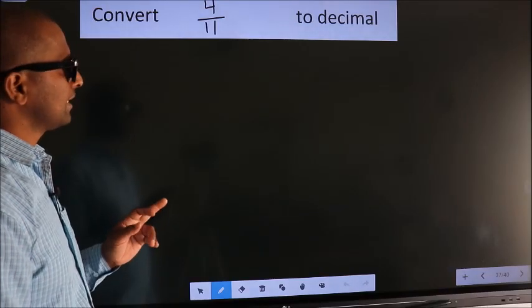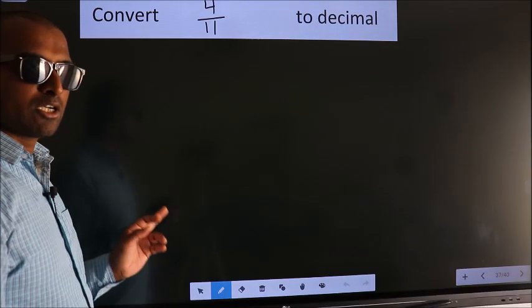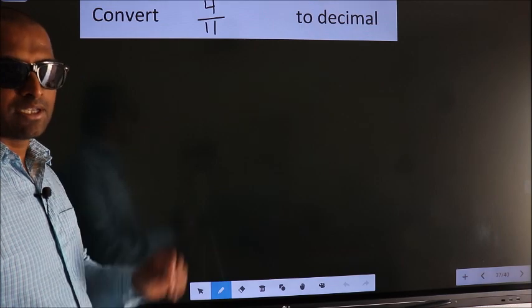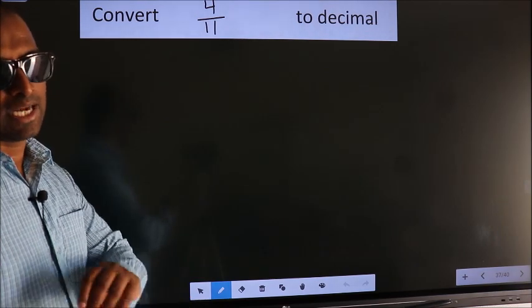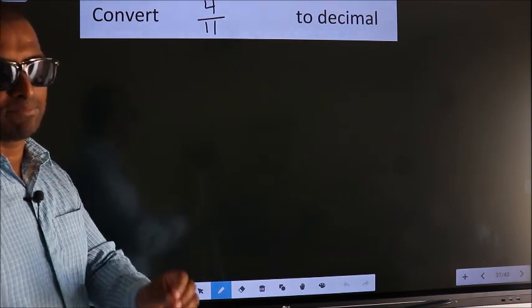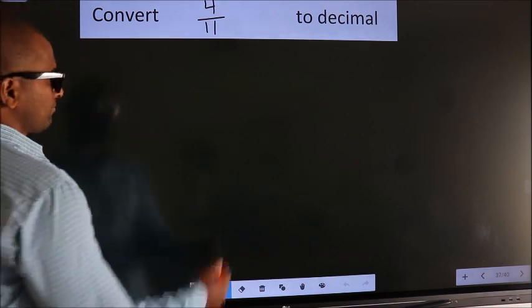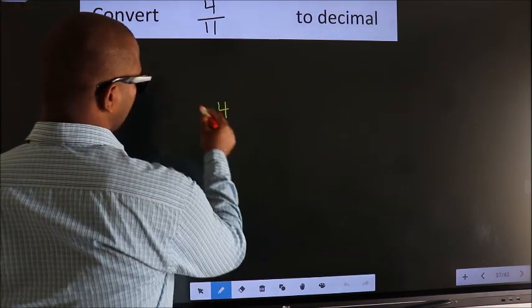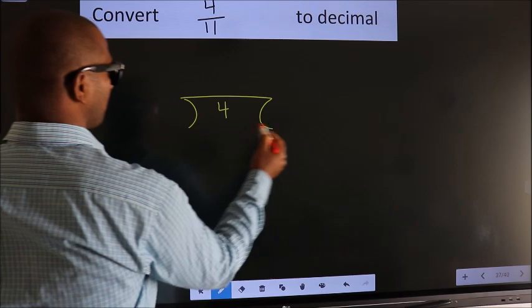Convert 4 by 11 to decimal. To convert this to decimal we have to divide, and to divide we should frame it in this way: 4 here, 11 here.